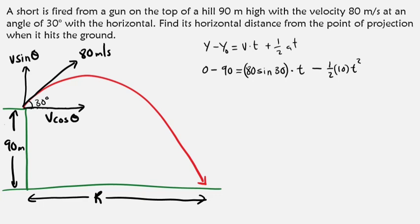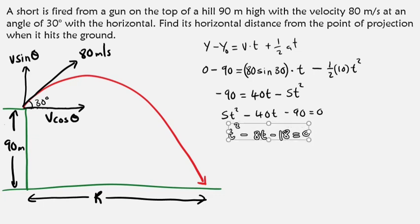We're using negative because this object is going up. So this gives us -90 equals, sine theta is half, half of 80 is 40, so 40t minus 5t². So if I rearrange this, it will become 5t² minus 40t minus 90 equals zero. I can reduce this: 5 can go into 5 once, 5 can go into 40 eight times, 5 can go into 90 eighteen times. So I've just reduced our equation. This is a quadratic equation. Let's solve the quadratic equation.